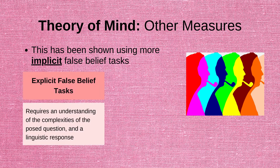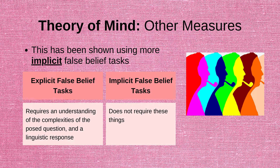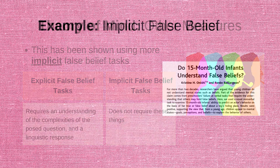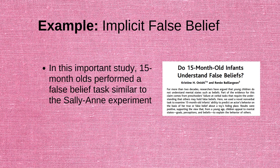While explicit false belief tasks such as the traditional Sally-Ann experiment require the participants to both understand the complexities of the questions posed by the experimenter and to provide linguistic responses to these questions, these requirements are avoided when using more implicit measures. One example of an implicit false belief task was used in a study conducted by Onishi and Baillargeon in 2005. In this important experiment, 15-month-old children performed a false belief task similar to the Sally-Ann experiment.